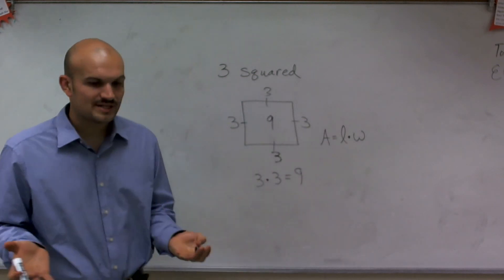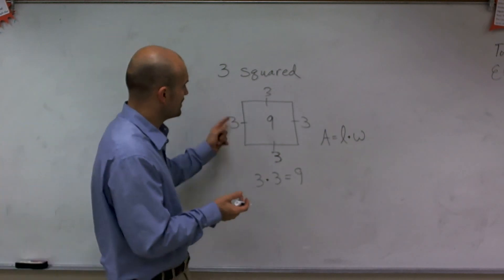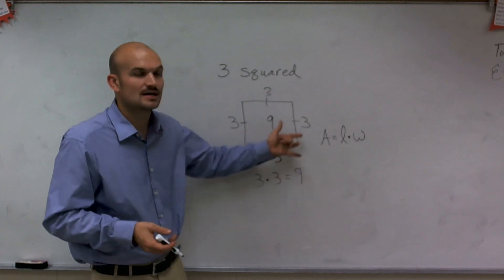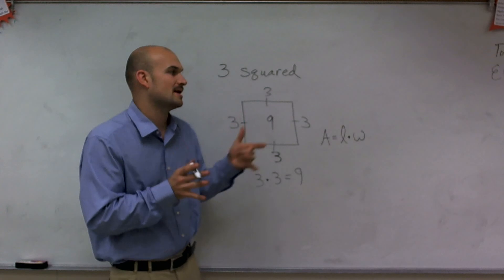So when I take 3 squared, what that means is you take your number and multiply it by itself. You can think of it as side lengths of a square. So when you define 3 squared, that just means to multiply it by itself.